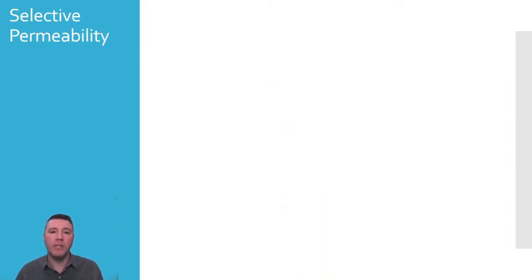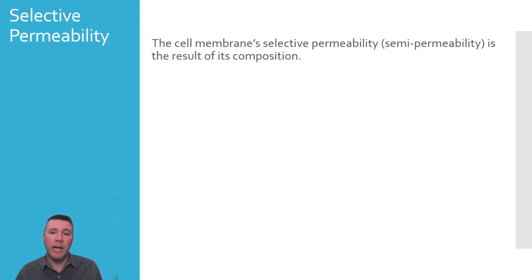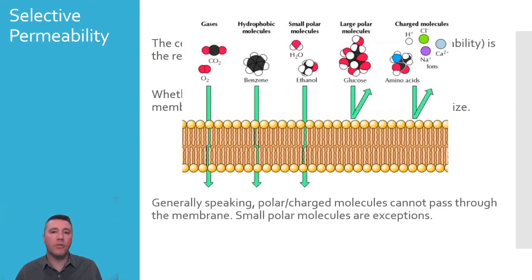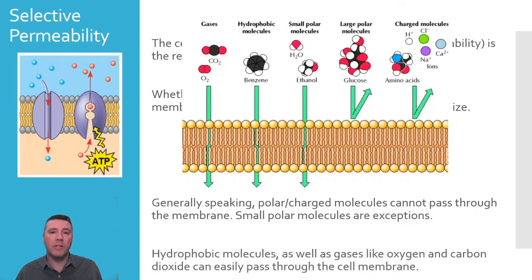Now that we know how the cell membrane is constructed and how it influences selective permeability, what kinds of molecules are free to pass through the membrane, and what kinds aren't? Two main factors determine whether or not a molecule can pass through the cell membrane directly: solubility in water and molecule size. Some polar molecules can travel through the core of the membrane if they're small enough, but large polar molecules and anything with a charge, like sodium or calcium ions, are restricted from traveling directly through the membrane and instead require assistance from transport proteins. Gases like oxygen and carbon dioxide, as well as hydrophobic molecules, can pass directly through the membrane because they can pass through the hydrophobic, water-free core of the membrane.